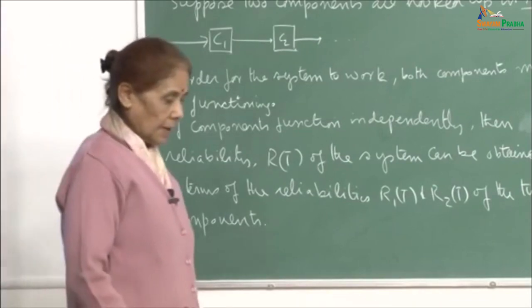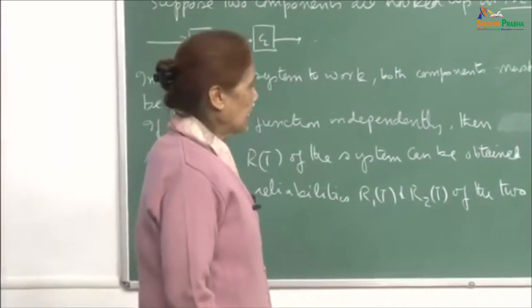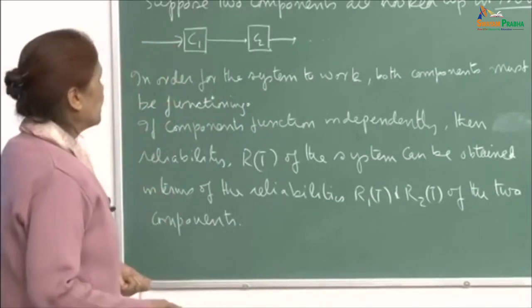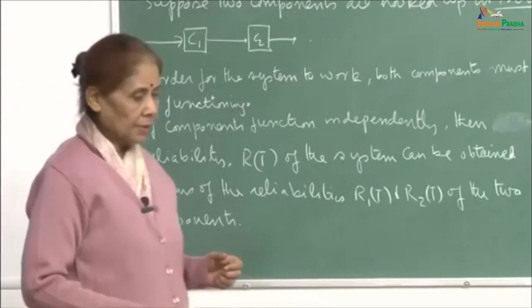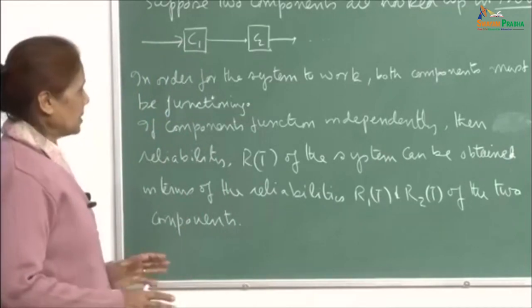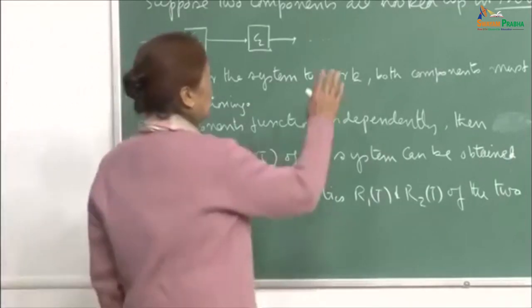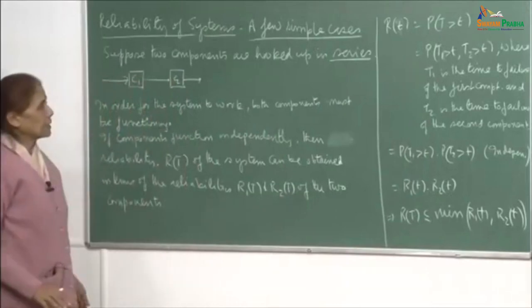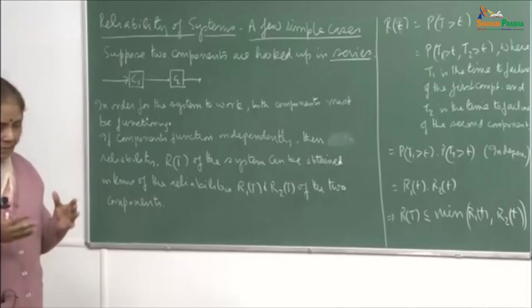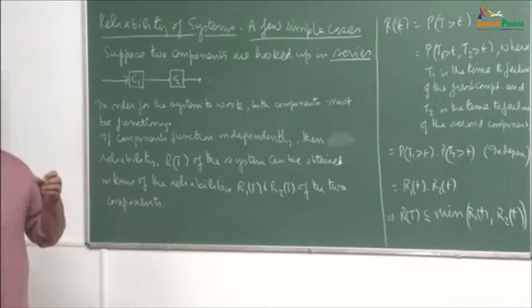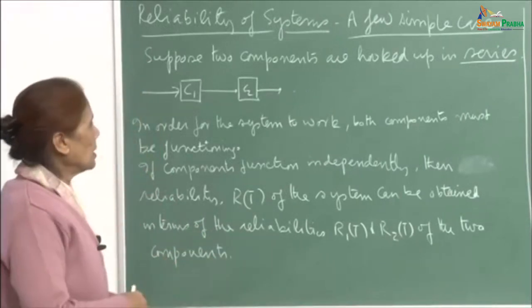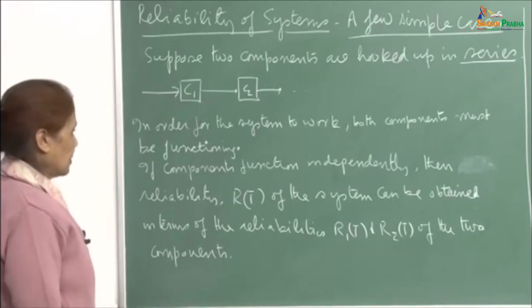Having discussed the reliability of a component or a device, where we are assuming that it is a single piece, a single component, let me now talk about reliability of systems where there are more than one component. The treatment will be simple. Once you learn the basic technique, you can always divide and break up a complex device into smaller systems, and then try to compute the reliability of the whole system.